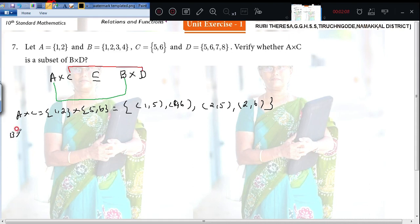Then B cross D. Now you see 1 comma 5, 1 comma 6, 2 comma 5, 2 comma 6. Is it possible to pair or not? Just you see B cross D, 1 comma 5, 1 comma 6, 2 comma 5, 2 comma 6. So it is automatically the subset.